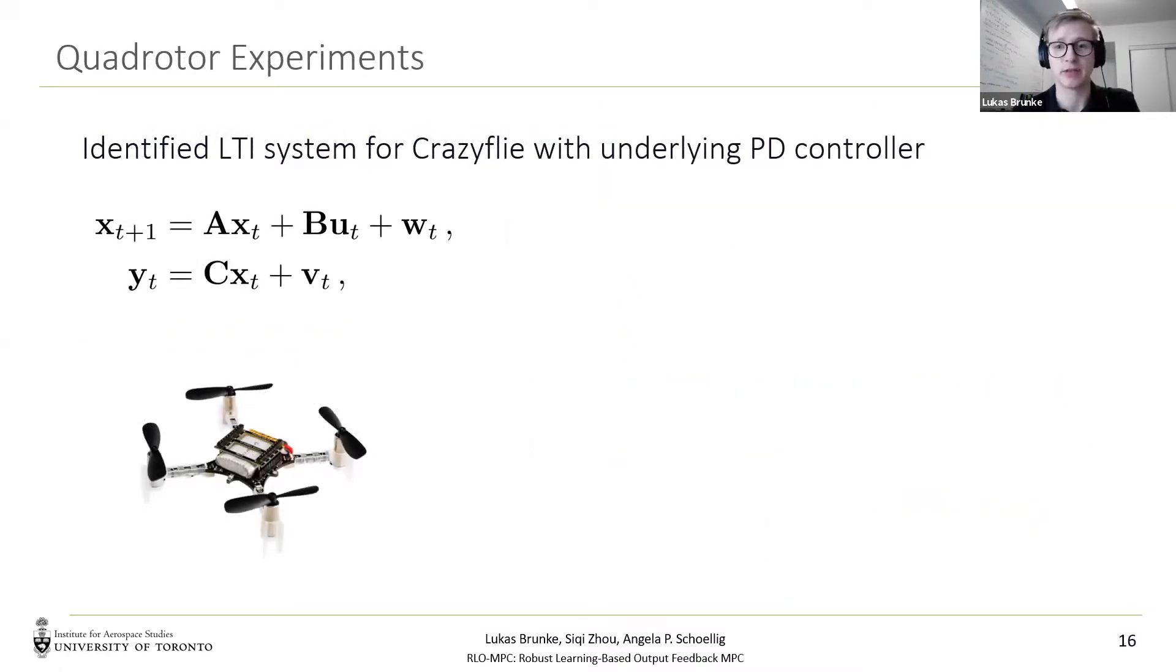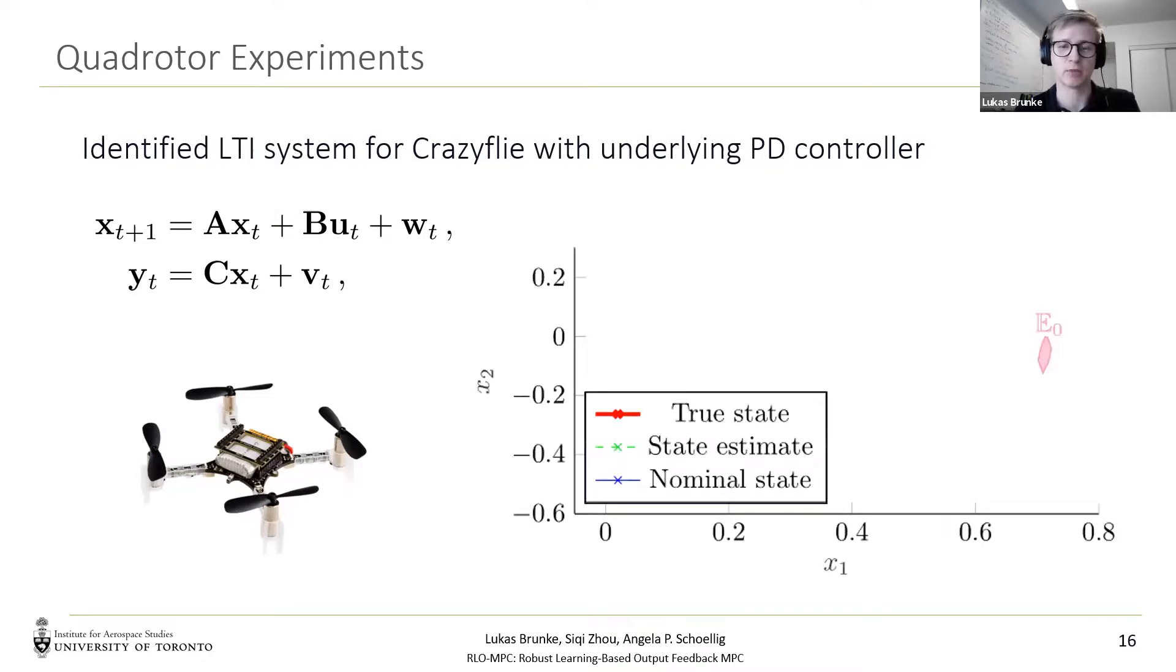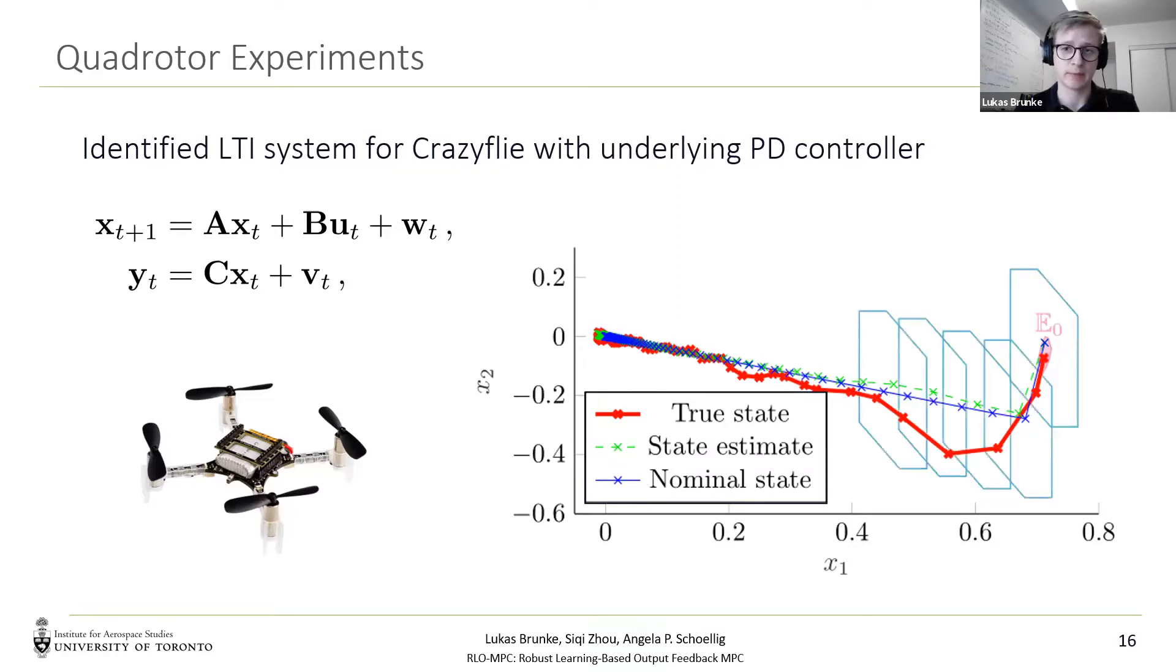Our controller can also safely control systems under uncertainty and experiments in the real world. And we identified an uncertain LTI system for a quadrotor for a stabilization task where the states are position and velocity in x direction. Here we see an x1, x2 plot and our initial state estimation set E0, where all iterations start from. Then we can show the nominal state of the system trajectory, which converges to the origin. We also can plot the state estimation trajectory, which is being close to the nominal state. And finally, we can plot the true state trajectory. And for the first couple of steps, we can also plot the error sets. And we see that the true state stays inside these error sets, confirming the identified model and uncertainty sets.